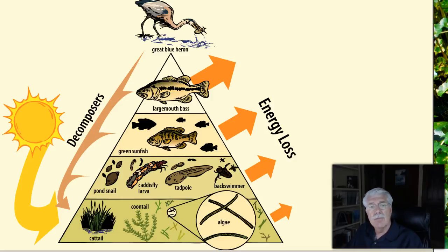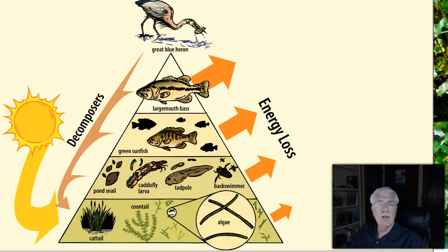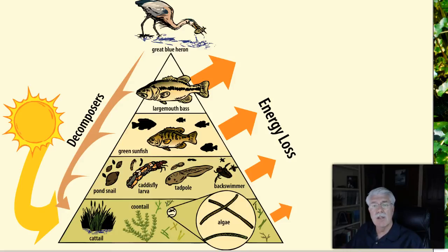An environment can support only a certain amount of life at each step in the energy pyramid. The higher up your energy pyramid an animal feeds, the fewer of this kind of animal the environment can support. Most energy pyramids can continue for only about four or five trophic levels and they can support only a few top level consumers. In Texas reservoirs, for example, largemouth bass and striped bass often occupy the top level of the food chain. These top level predators are fewer in number than the smaller fish species, the invertebrates, or the aquatic plants that are in this ecosystem.